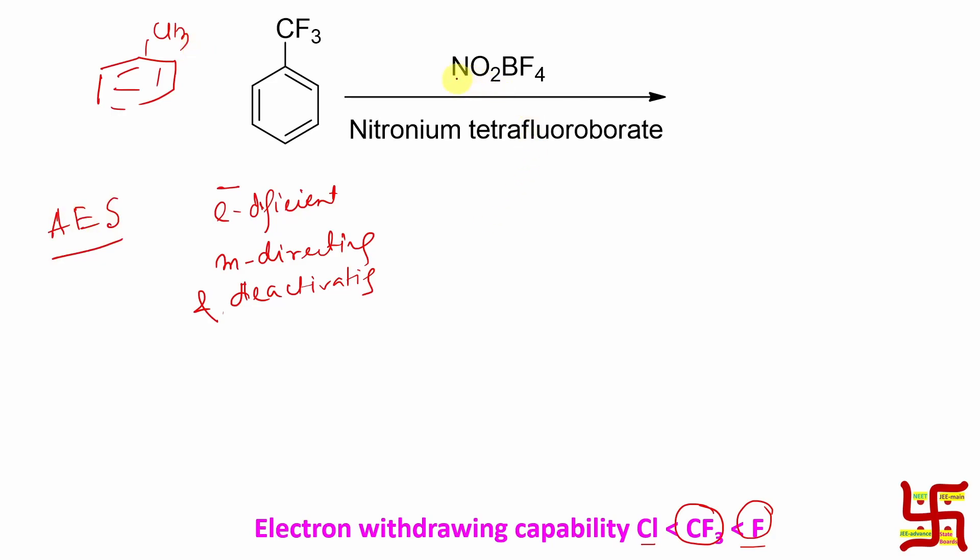Second, this salt, if you look at it, nitronium tetrafluoroborate, means here there are two types of parts: one is NO2+ with positive charge on nitrogen, and tetrafluoroborate BF4-. BF4- looks like this, and the negative charge is on boron. So nitronium is N double bond O double bond O with positive charge here, that's why it can act as electrophile.